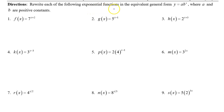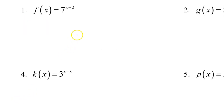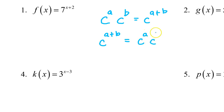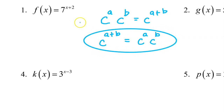Rewrite each of the following exponential functions in the equivalent general form y equals a·b to the x, where a and b are positive constants. We will use properties of exponents for the rewrite. We know that c to the a power times c to the b power equals c to the a plus b power. But this is reversible — if we start off with c to the a plus b power, that equals c to the a power times c to the b power. It is this property that we will use to rewrite these expressions.